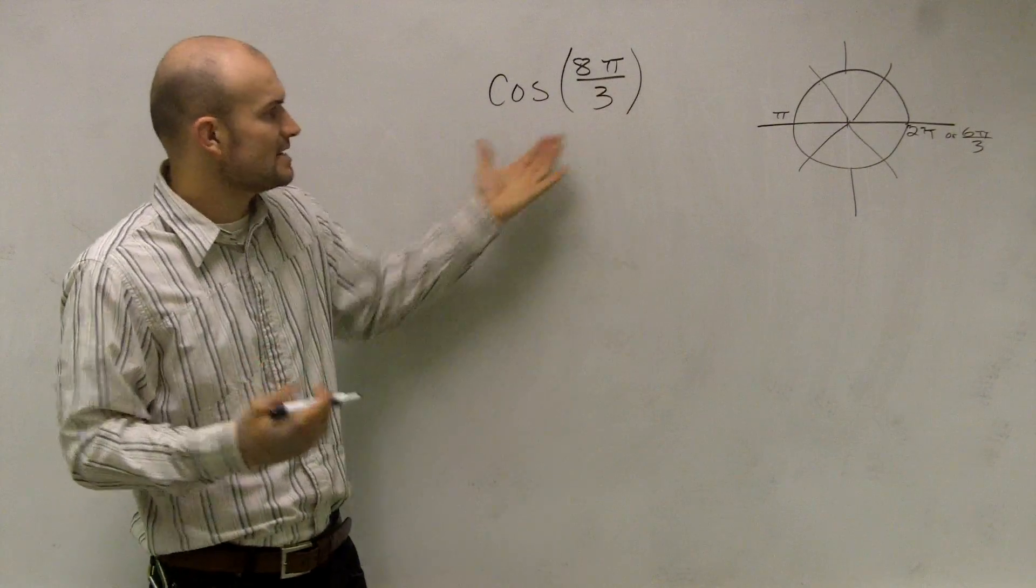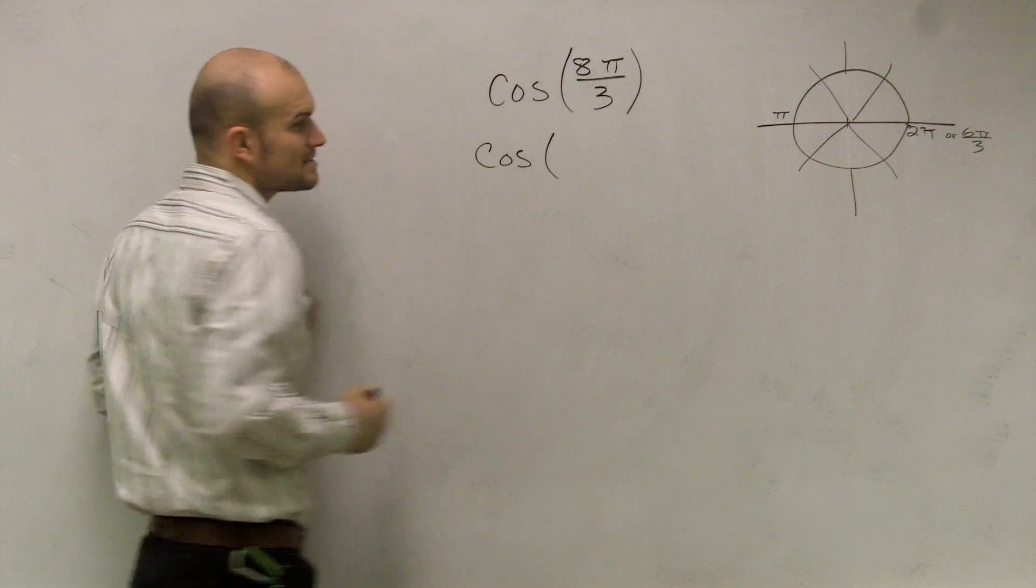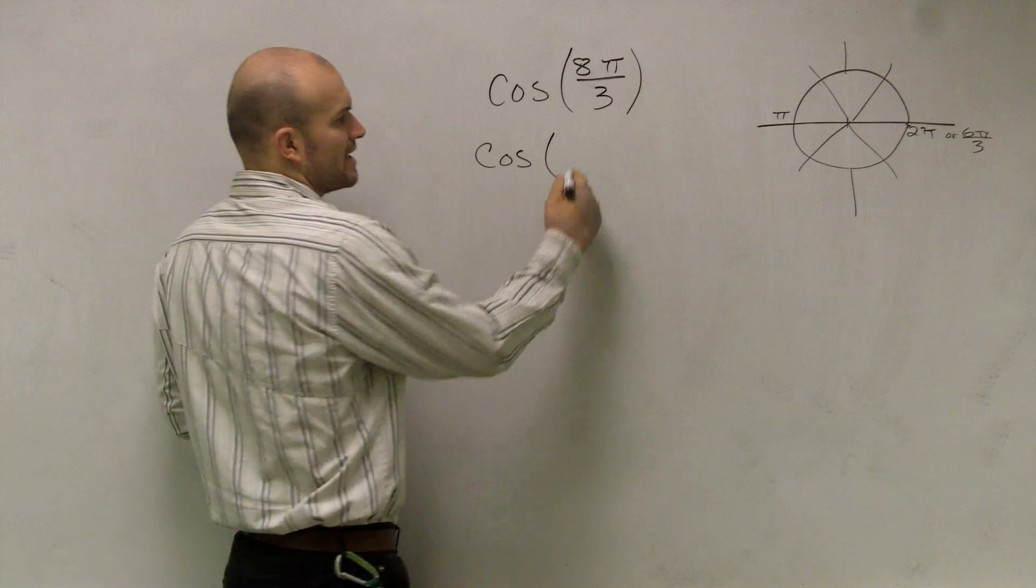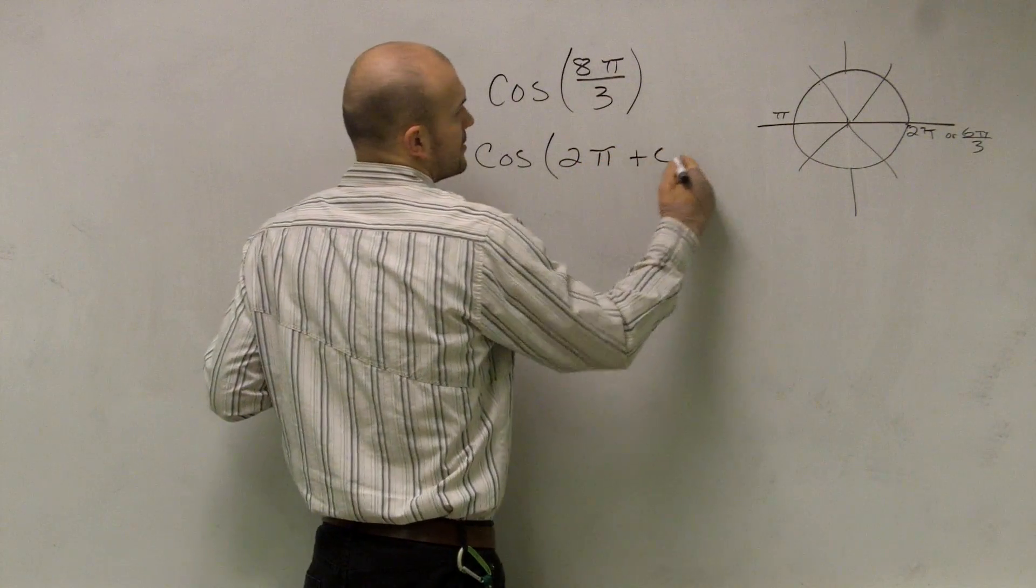So what they're saying is, can we write our cosine as a period of, say, 2π plus C.